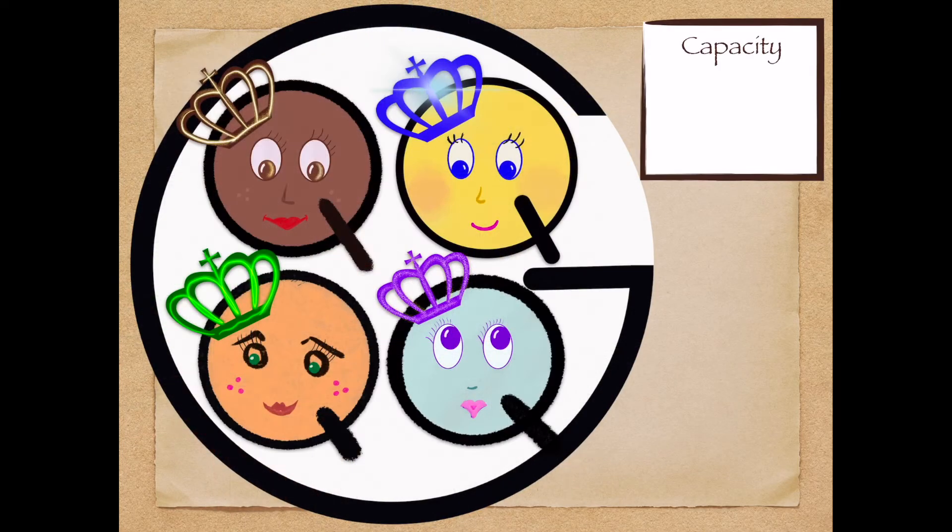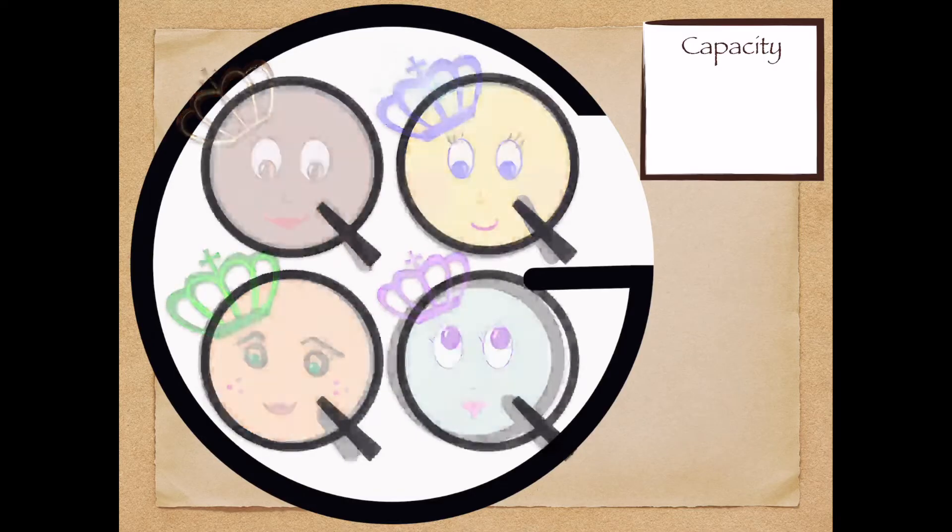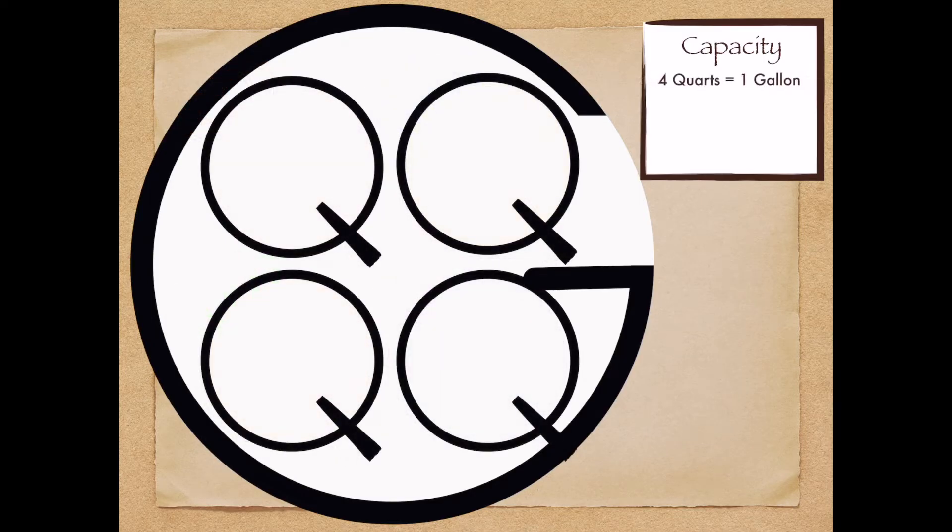Remember the four queens in the Land of Galen? Each Q stands for the next largest unit, the quart. There are four quarts in one gallon.